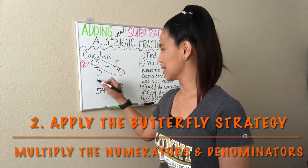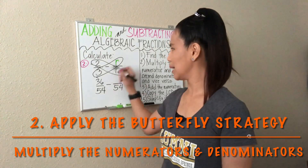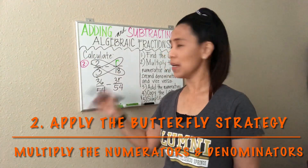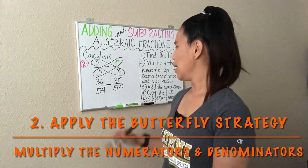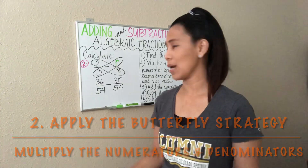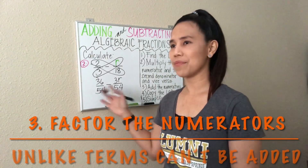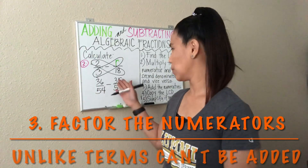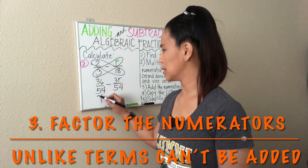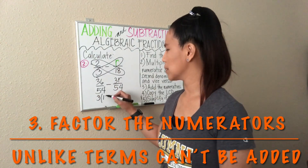2 times 18 is 36. And then the second numerator by the first denominator: 3 times R gives us 3R. Since this is a number and this is a variable, we just put them together. Since 3R has a variable and 36 does not, we cannot right away subtract them. What we can do is factor them. 3 is a factor of 36, so we can divide both of them by 3. So 36 divided by 3 is 12, meaning 3 is the common factor for 36 and 3. So we have 3 times 12 for 36.